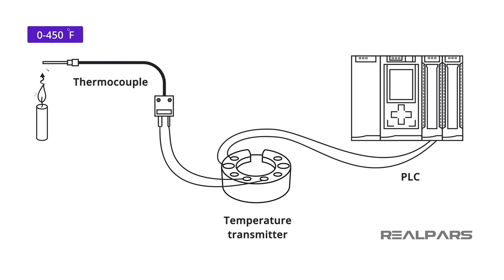Sensor output voltages are very small and therefore require a transmitter to amplify or condition the output to make it usable in process control applications.